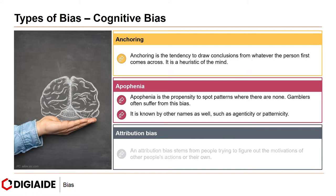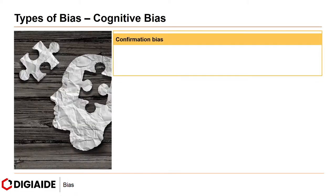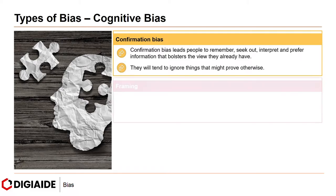Next, attribution bias. An attribution bias stems from people trying to figure out the motivations behind other people's actions or their own. Next, confirmation bias. Confirmation bias leads people to remember, seek out, interpret, and prefer information that bolsters the view they already have. They will tend to ignore things that might prove otherwise.